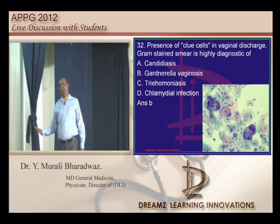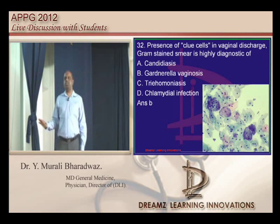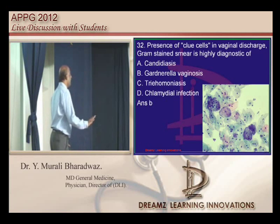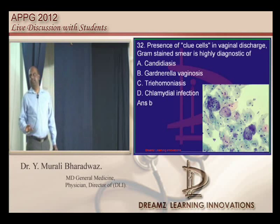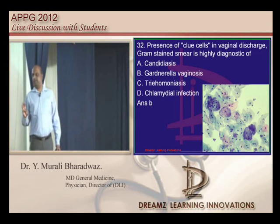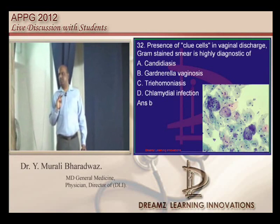Clue cells, greenish vaginal discharge, and Gardnerella vaginosis — I think this is the cheapest and easiest achievable question we should not get wrong.